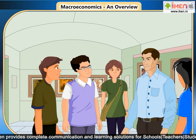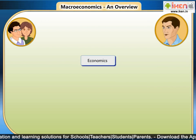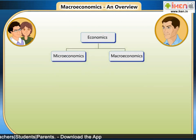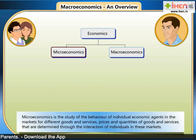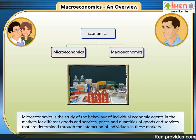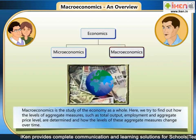As you all know, economics is branched into two main parts: microeconomics and macroeconomics. Microeconomics is the study of the behavior of individual economic agents in the markets for different goods and services. Prices and quantities of goods and services are determined through the interaction of individuals in these markets. Macroeconomics, on the other hand, is the study of the economy as a whole.